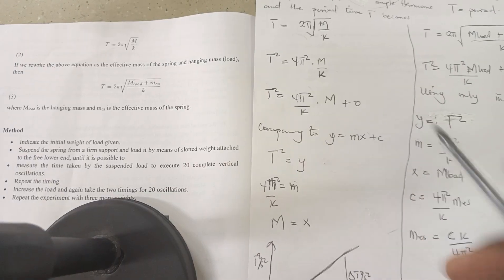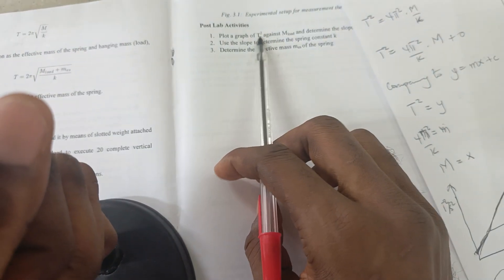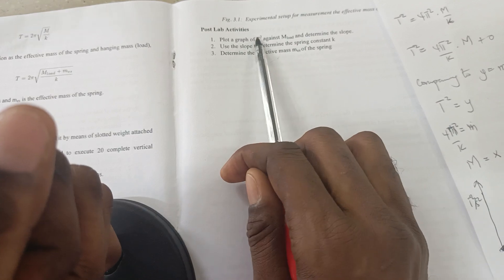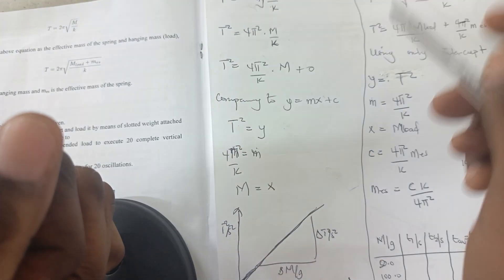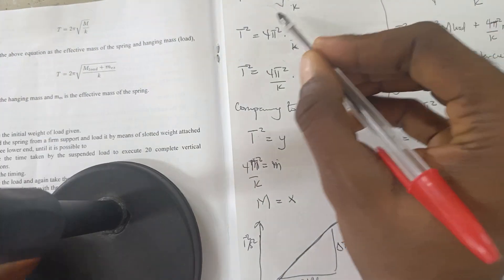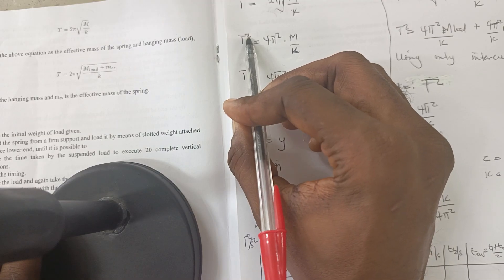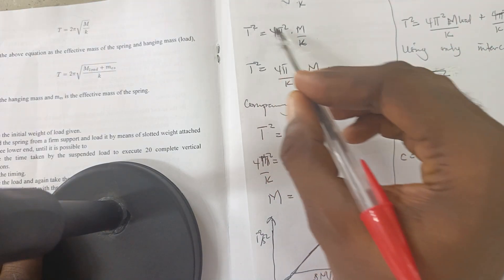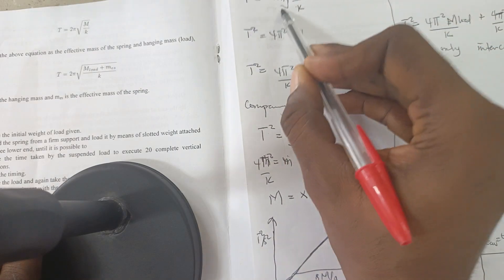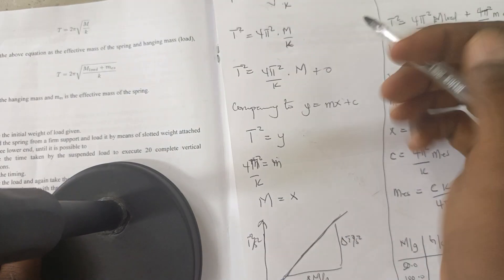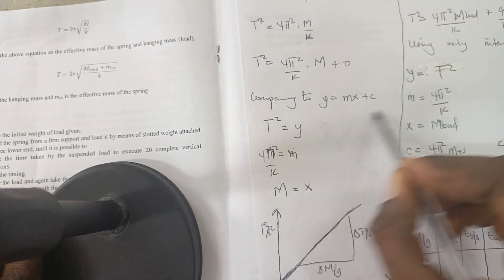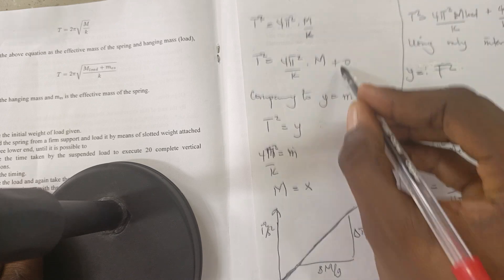This is the theory behind the experiment. This is the equation we're given, and we start from here. They say we should plot the period squared against the mass — the load. So we square both sides: T² on one side, and four pi squared times the expression on the other, removing the square root.